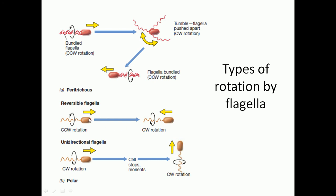For reversible flagellar movement, both clockwise and counter-clockwise rotation are possible. Counter-clockwise rotation moves the bacteria from left to right, and then once the flagella start to rotate in the clockwise orientation, the bacteria can go back from right to left. So anti-clockwise means left to right, and clockwise means right to left. This is the way of rotation using reversible polar flagella.